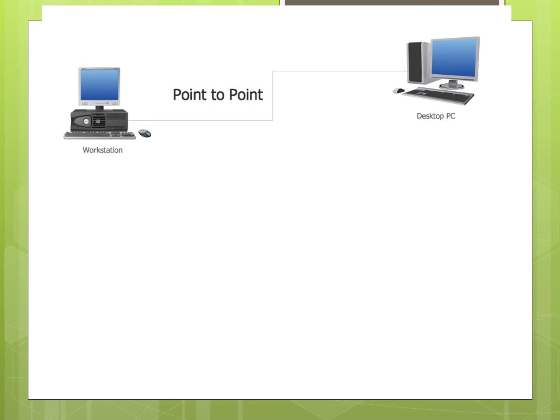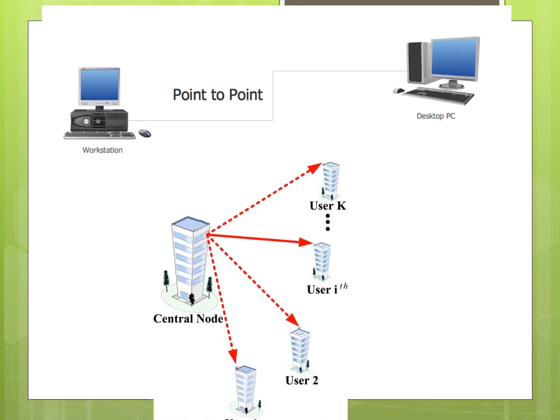Next comes point-to-point topology — the last topology. It is one of the simplest topologies and data transmission takes place at a faster rate. Only two workstations are connected via a cable, so one station easily transfers data to the other. In point-to-point topology, there is also point-to-multipoint topology, where one central node is connected to multiple users.